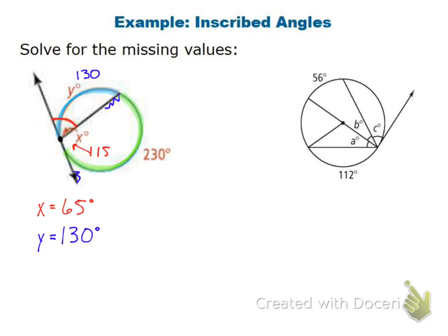With the second problem, same type of thing. First I find angle B: the arc being eaten by angle B is 56 degrees, so I cut it in half and angle B equals 28 degrees. This line across the middle is a diameter, so if this arc is 112, the other arc is 68. Angle A is eating the 68-degree arc, so angle A equals 34 degrees.